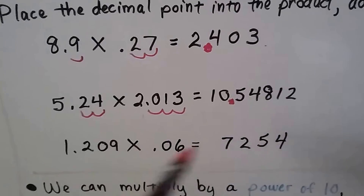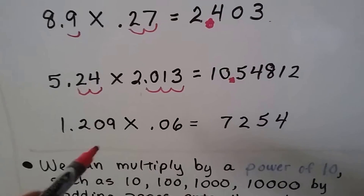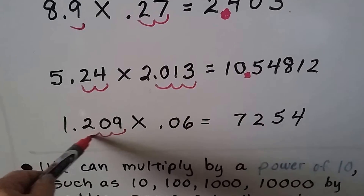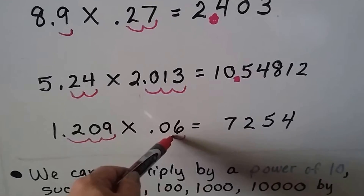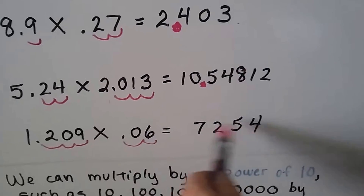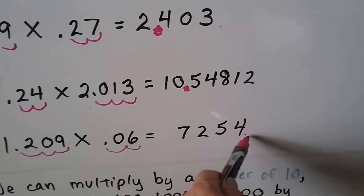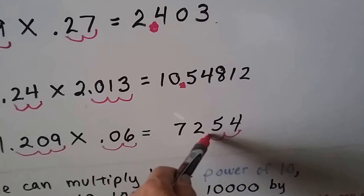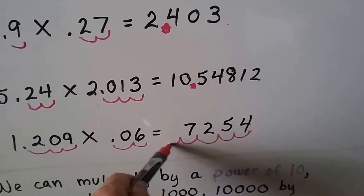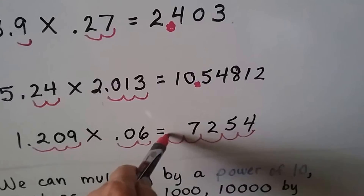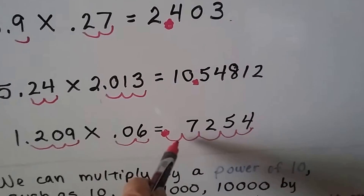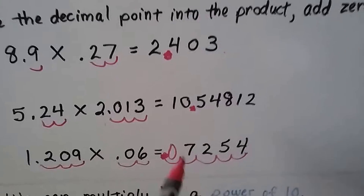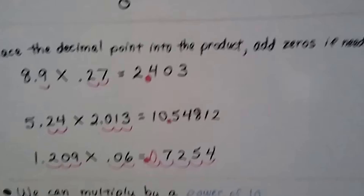However many hops are in the equation, that's what it's going to be in the product. For some examples in the book, we've got five hops but only four digits. If we count one, two, three, four, five, that's putting the decimal point way over, and we have a hop with nothing there — so we just put a zero there as a placeholder. It's going to say add zeros if you need to.